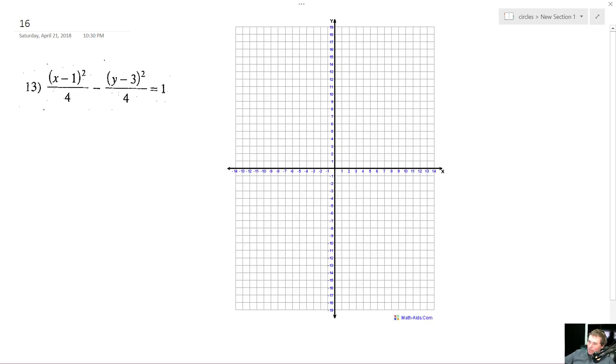So starting off, before anything else, we want to find the center. The center is just going to be the offset of the x and y components. So it's going to be 1, 3. And this is opening up left to right because the x component is the positive portion. So 1, 3.